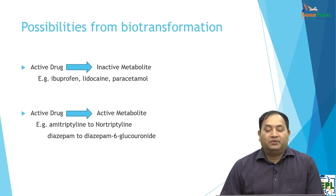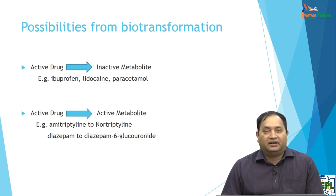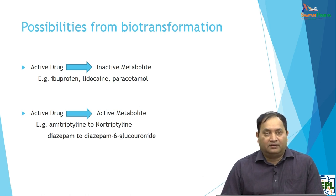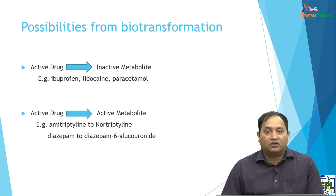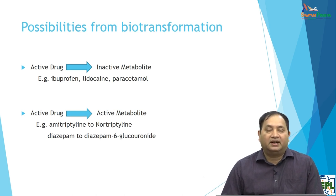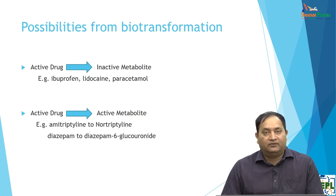Let us consider the possibilities of biotransformation. When a drug is given and there is an active metabolite, you will get an effect and must be careful. In biotransformation, an active drug can become an inactive metabolite. Examples include ibuprofen, lignocaine, or paracetamol, which become inactive metabolites from active drugs. Another possibility is that an active drug produces an active metabolite — such as amitriptyline, which is converted to nortriptyline, or diazepam, which is converted to diazepam-6-glucuronide. So there are two situations: active drug to inactive metabolite, and active drug to pharmacologically active metabolite.